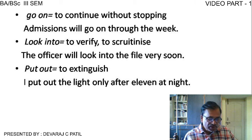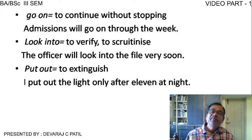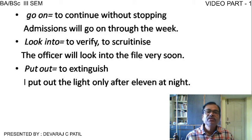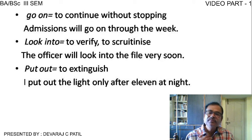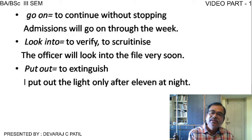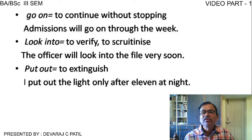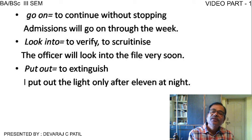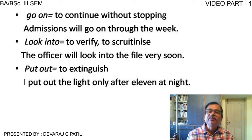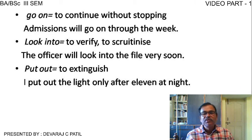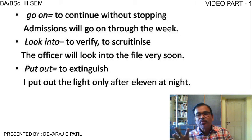For example, 'abide by' means to follow or obey the rules. If I say 'I abide by the rules of the college,' there is no change in 'abide by.' But if I use 'he' instead of 'I,' it becomes 'he abides by the rules of the college' — because 'he' is third person singular, the main verb gets an 's' added in simple present tense. You have to see how it is properly used in agreement with the subject.